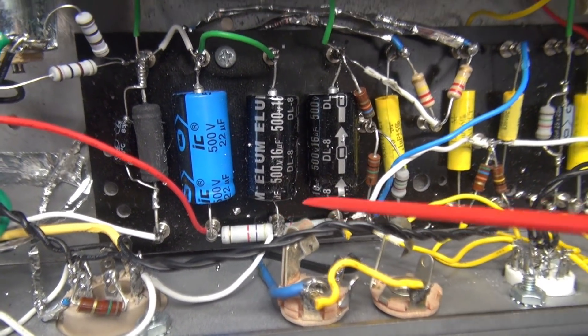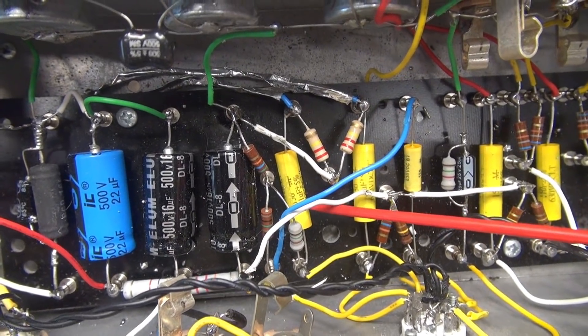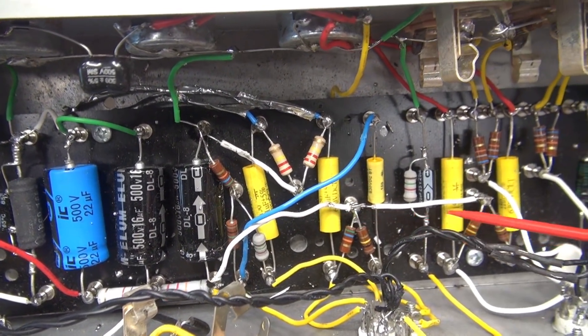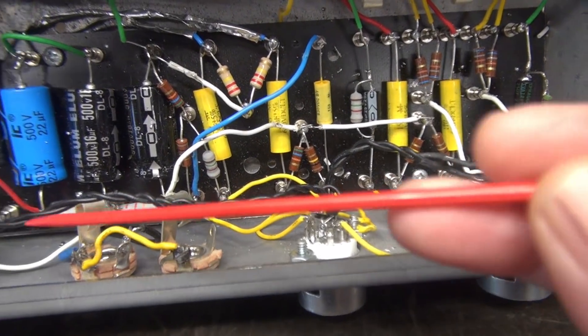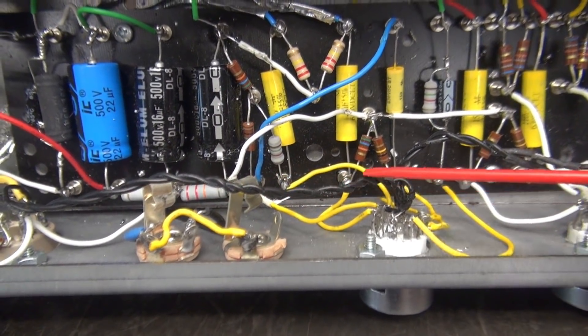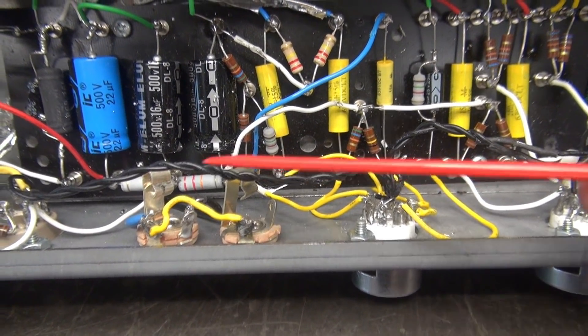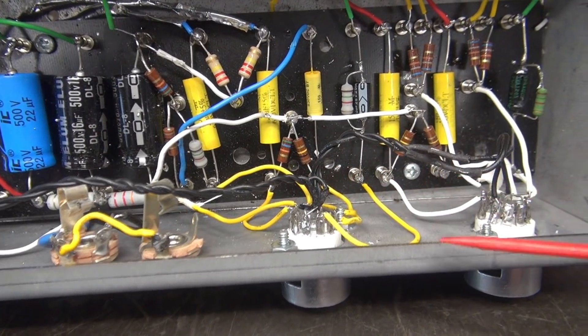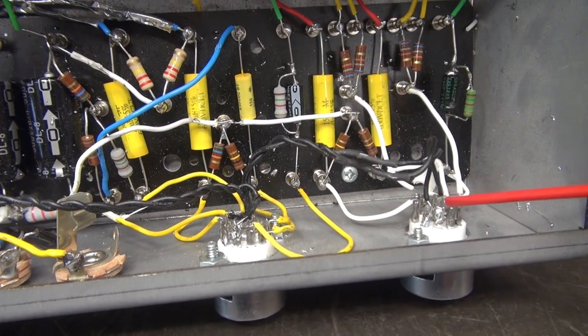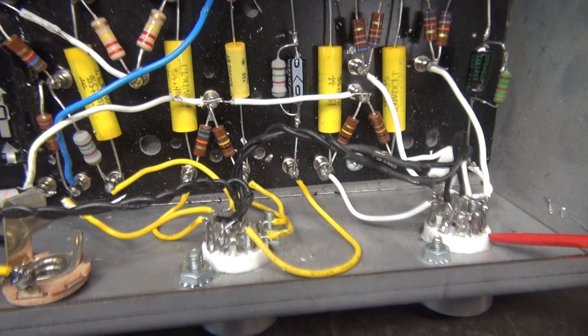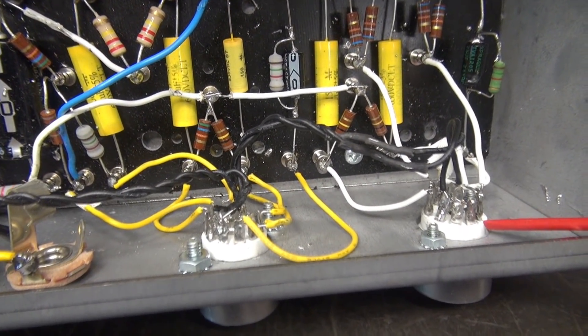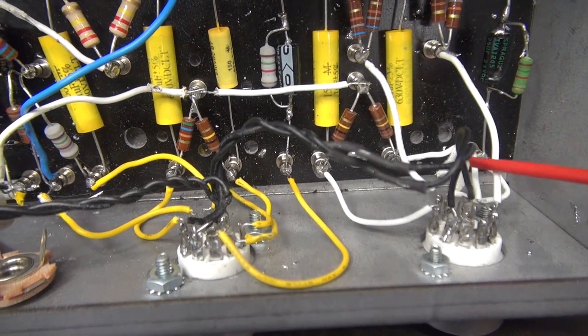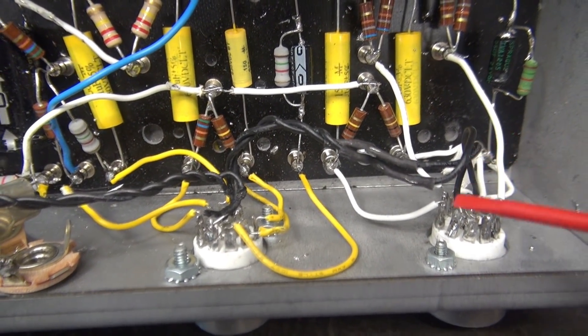This is a turret board that he used. These I believe are the Mallory 150 series coupling caps, so that's good. Got our filament lines here. The dressing isn't the best—I really don't like it over those speaker jacks, but I'll correct that later. Here are those nine-pin ceramic Chinese sockets. I've had a lot of problems with these.